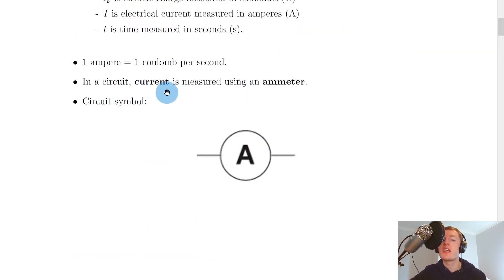You should also remember that in a circuit, current is measured using a device called an ammeter. And this is its circuit symbol here. So it's basically just a big circle with a capital A in it.